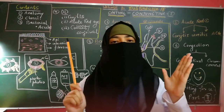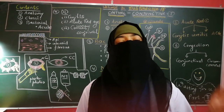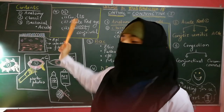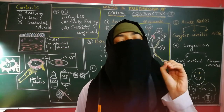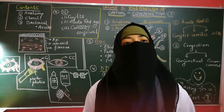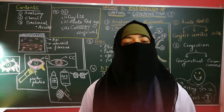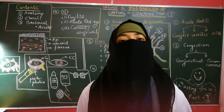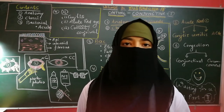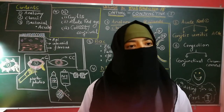Regarding the basic histology: the conjunctiva is made up of three layers — the epithelium, the adenoid layer, and the fibrous layer. In the adenoid layer, there are lymphocytes which can develop into follicles in certain conditions. A very characteristic example is trachoma, which shows follicular conjunctivitis — that is the importance of this adenoid layer.